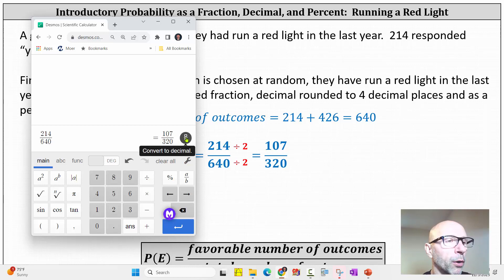Going back to the decimal form, because we have a 7 in the 5th decimal place, the probability rounded to 4 decimal places is 0.3344.